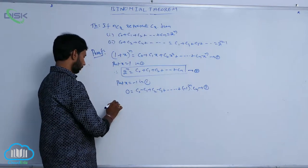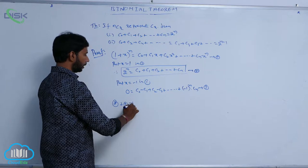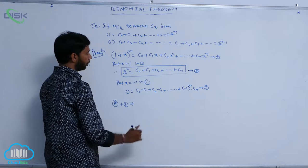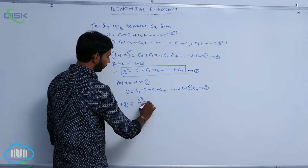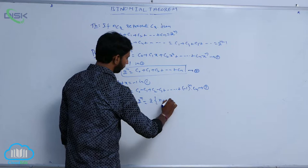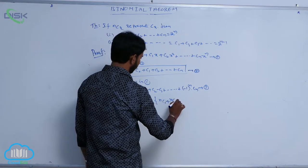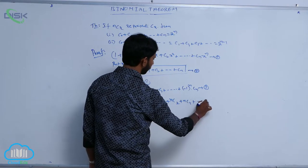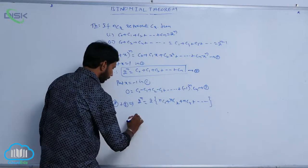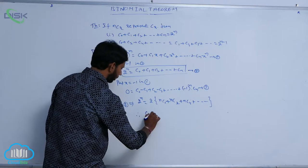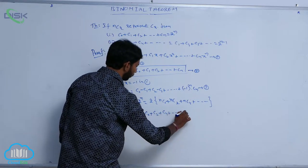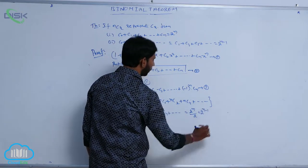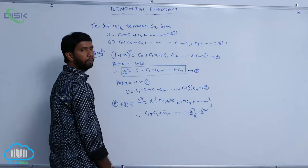Adding conditions 2 and 3: the -C₁ and +C₁ cancel, -C₃ and +C₃ cancel, and so on. That gives 2ⁿ = 2(C₀ + C₂ + C₄ + ...). Dividing by 2: C₀ + C₂ + C₄ + ... = 2ⁿ/2 = 2ⁿ⁻¹.